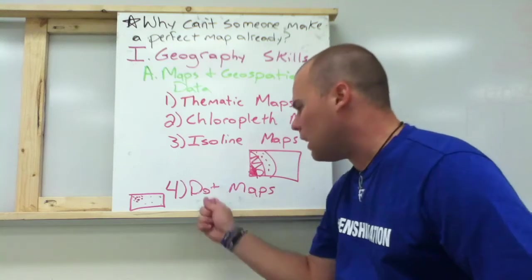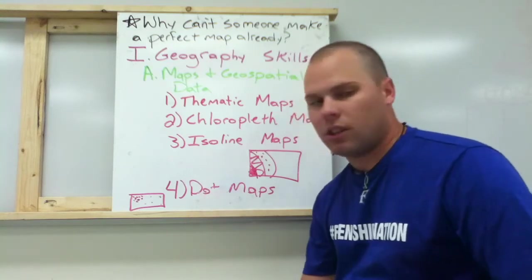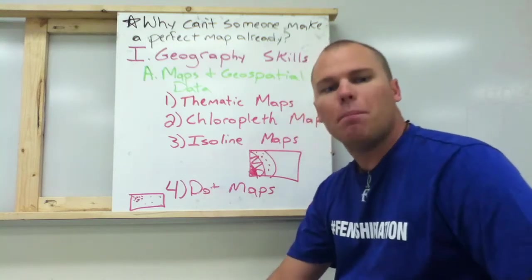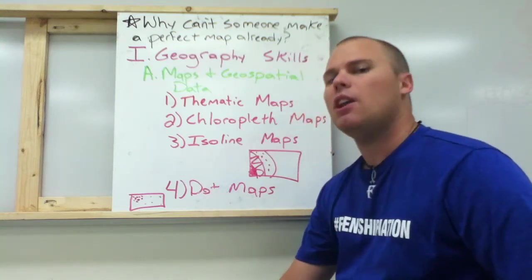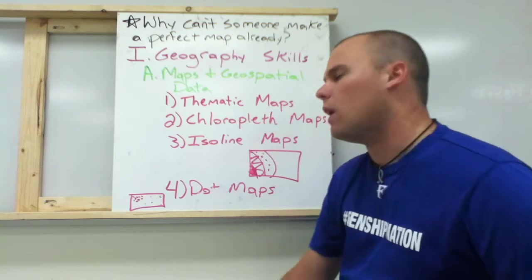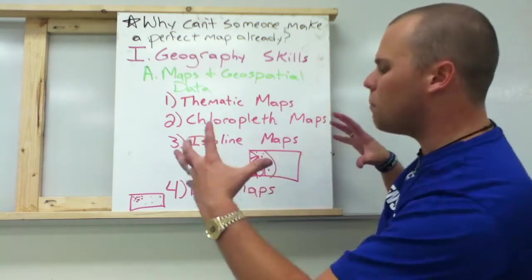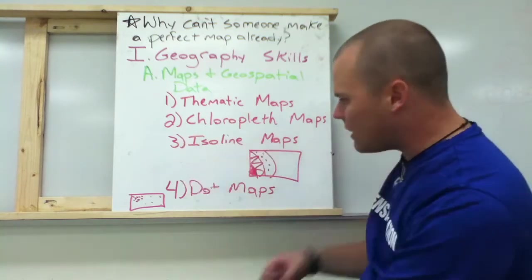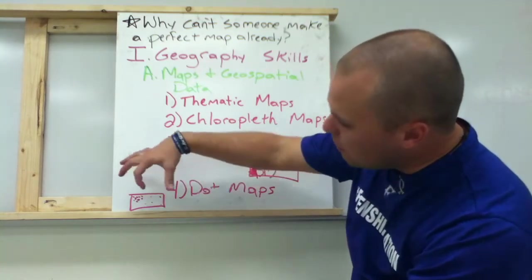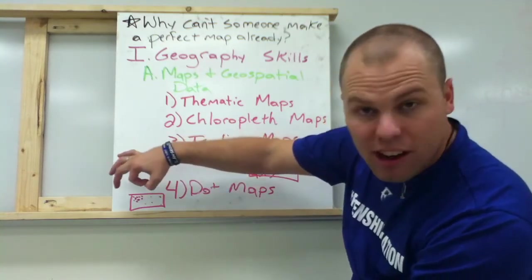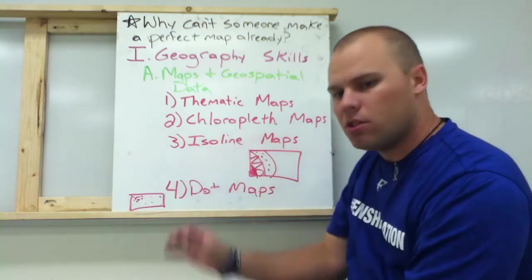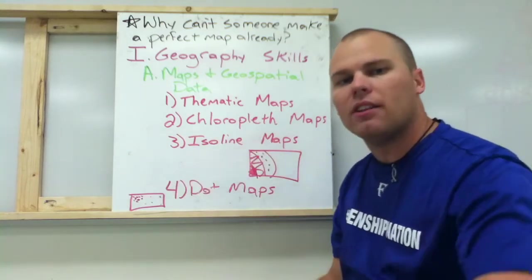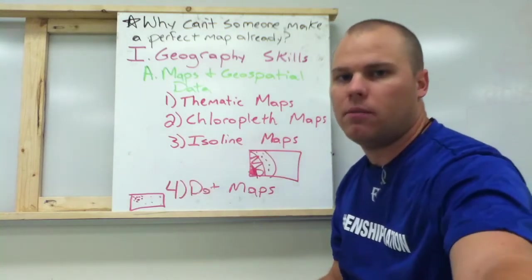Last but not least, dot maps. You've seen these — they are maps like of the United States where the bigger the dot, the bigger the city is. The smaller the dot, the smaller the city.